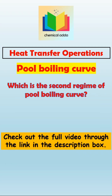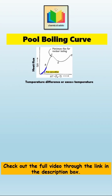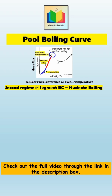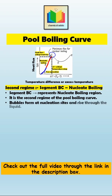Which is the second regime of the pool boiling curve? What is nucleate boiling? Segment BC of the boiling curve represents the second regime, known as nucleate boiling. Nucleate boiling is the second regime of boiling, where a large number of bubbles are formed at nucleation sites, rise through the liquid, and cause strong liquid circulation.